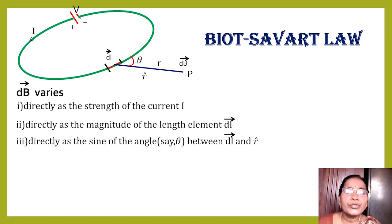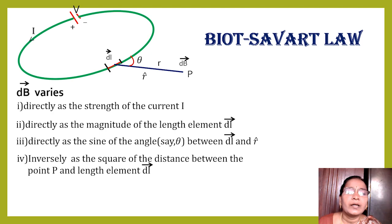It is also directly proportional to the sine of the angle between R̂ and DL. dB is inversely proportional to the square of the distance between the point and the length element DL.